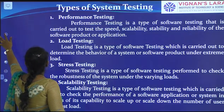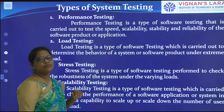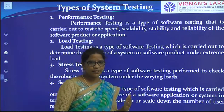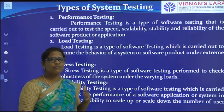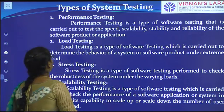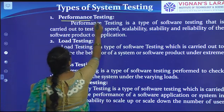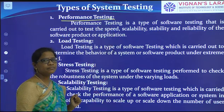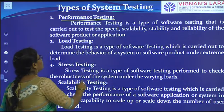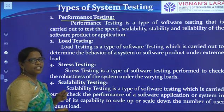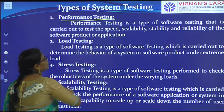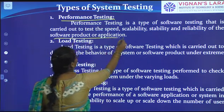Next, coming to what types of system testings are there — we have seen different types of testings. In system testing also there are different types of testings. The first one is performance testing. Performance testing is a type of software testing that is carried out to test the speed, scalability, stability, and reliability of the software product or application.